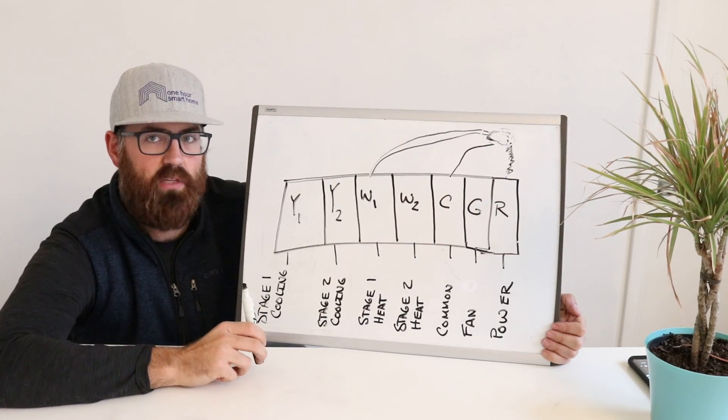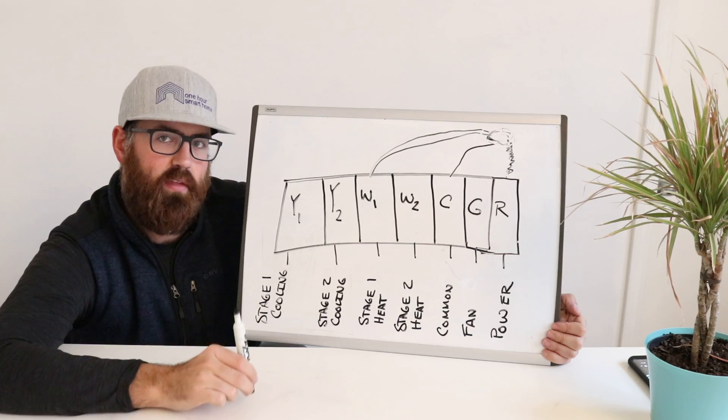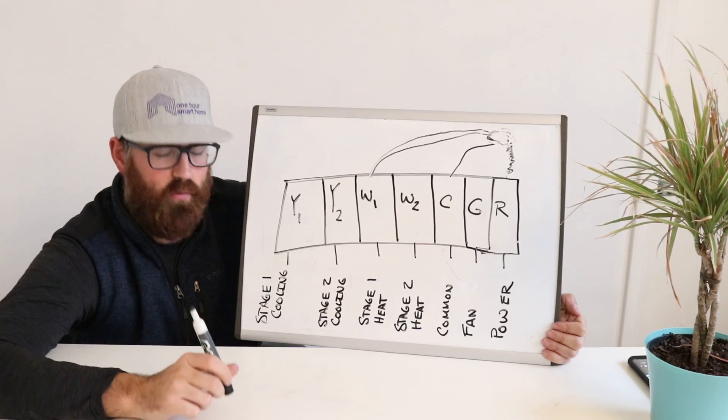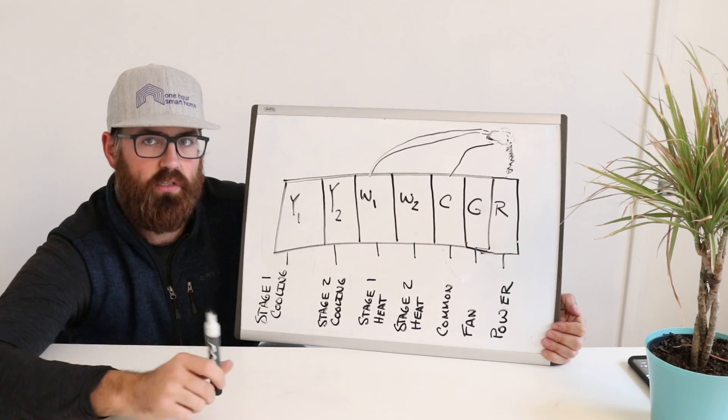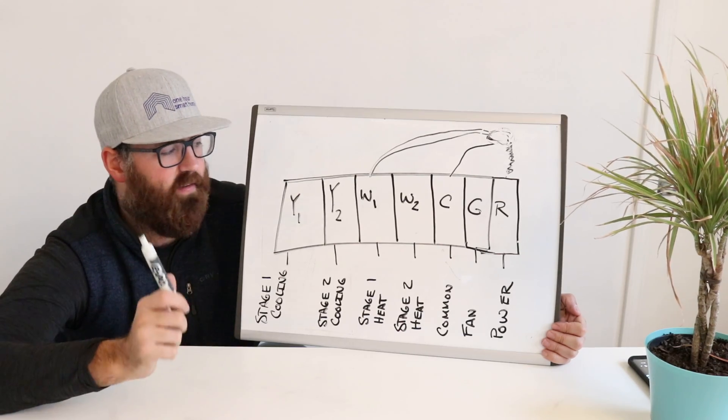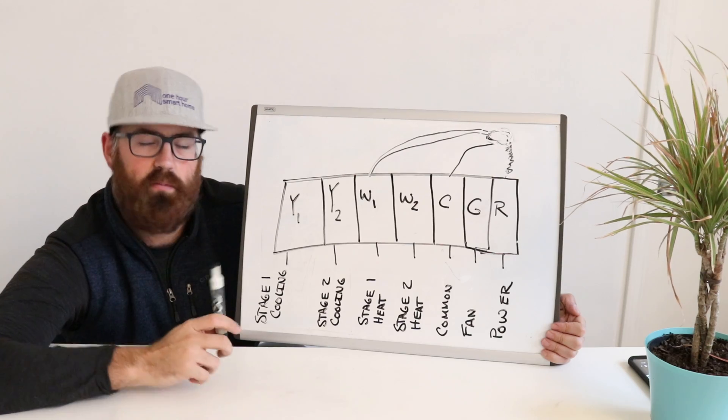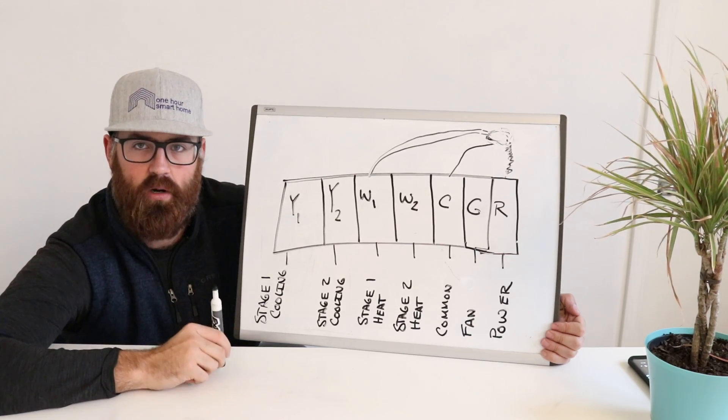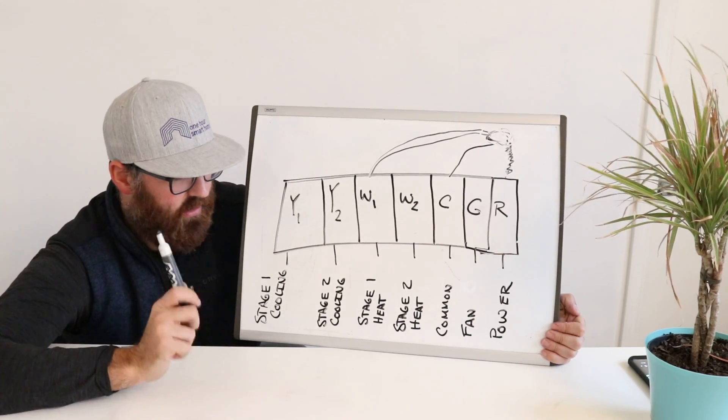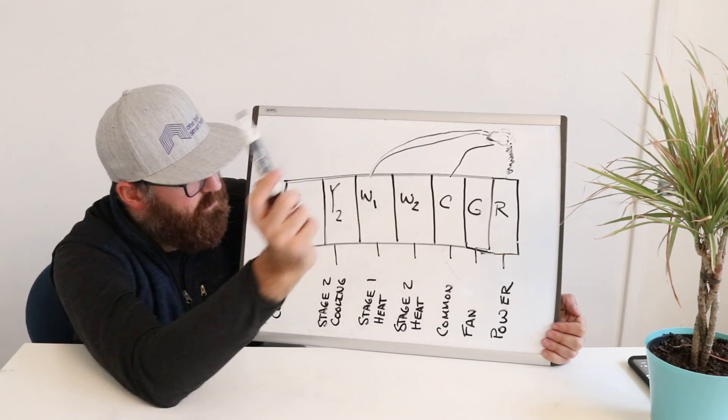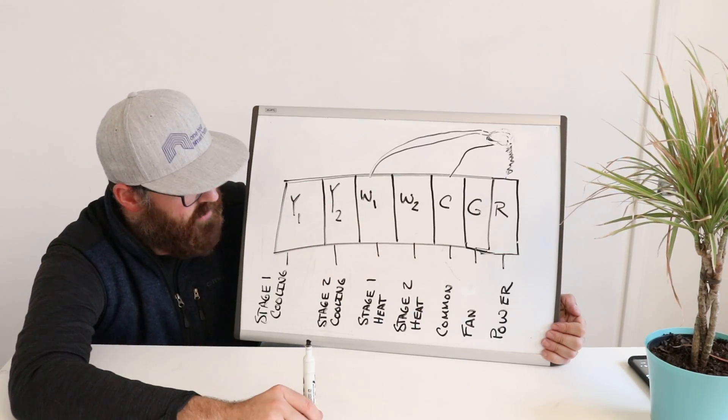But smart thermostats use a lot more power today than the old style thermostats that were powered by batteries because Wi-Fi requires a lot of power to be able to be connected 100% of the time so you can check your thermostat from anywhere on your phone or control it with Alexa. Hence the reason many smart thermostats need a common wire.